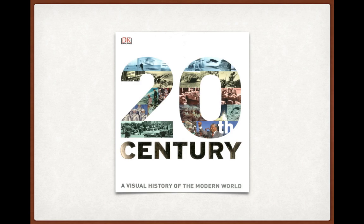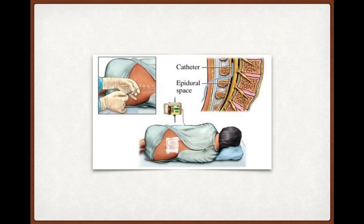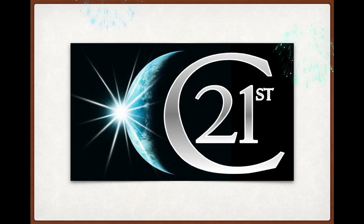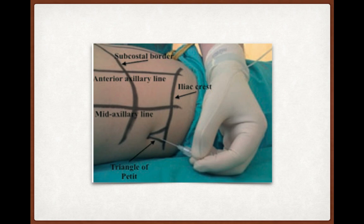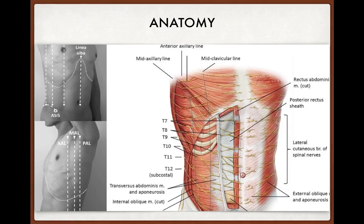Looking at the history, in the 20th century the option for providing analgesia in abdominal surgery was epidural — it was the gold standard and provides excellent analgesia. But because of increased use of anticoagulants in abdominal surgeries, increased use of laparoscopic surgery, and early mobilization, use of epidurals has been reduced. In the beginning of the 21st century, Raffi and McDonald introduced TAP block, and it was like a game changer for providing analgesia in abdominal surgery.